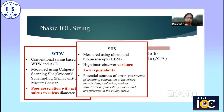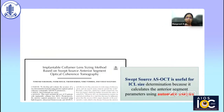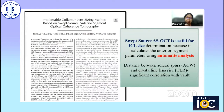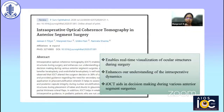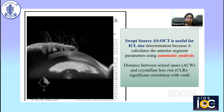Image selection, unclear visualization of the sulcus, sulcus irregularities, and misdirection of scanning are potential sources of error. Angle-to-angle distance measured using OCT has significantly higher reproducibility than white-to-white measurement and correlates with post-operative vault. Swept-source OCT is used for determining ICL size based on angle-to-angle distance, with automatic analysis calculating anterior segment parameters. The distance between the scleral spurs and crystalline lens size has significant correlation with vault. CASIA provides 360-degree reconstruction of the anterior segment and is a useful tool to determine ICL size.